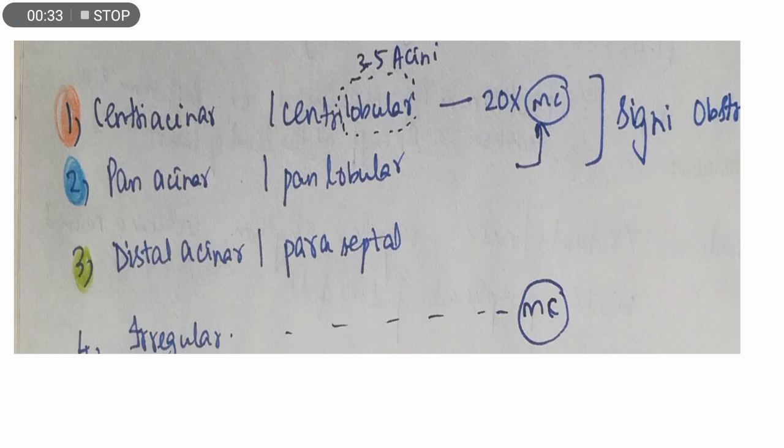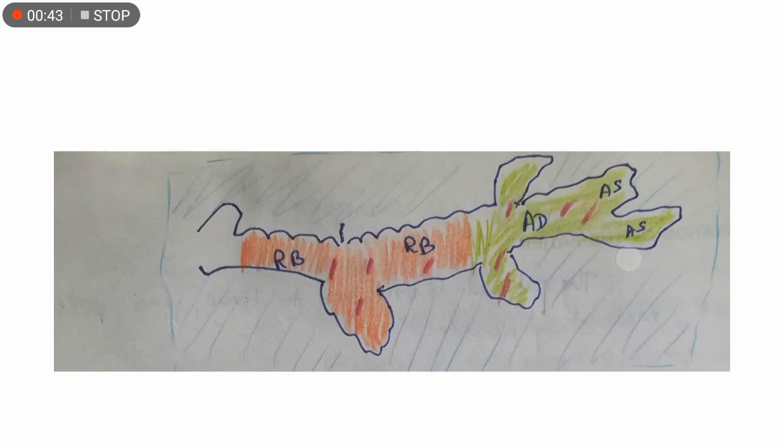When compared with centriacinar and panacinar emphysema, both cause significant obstruction. However, centriacinar is 20 times more common than panacinar emphysema.